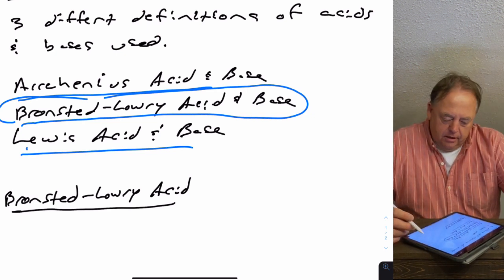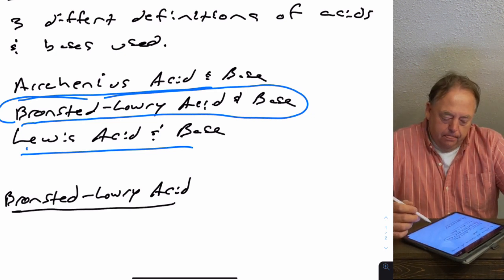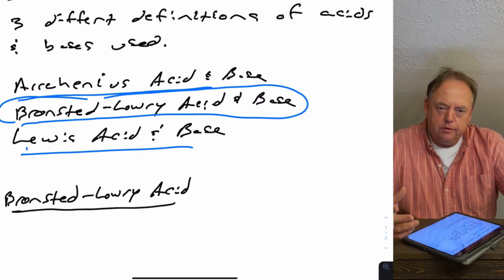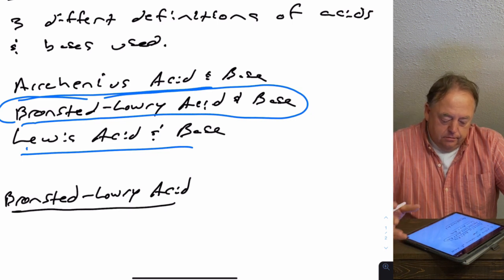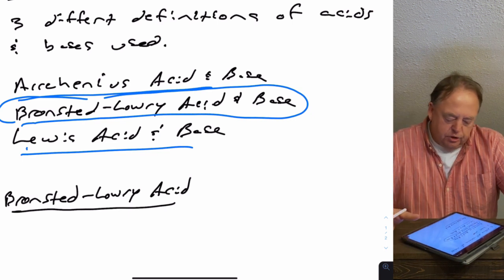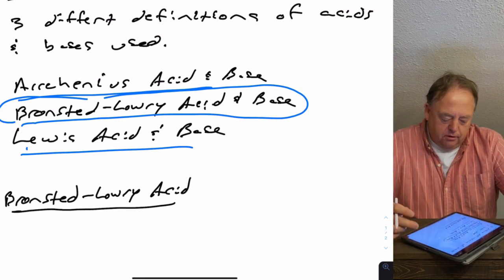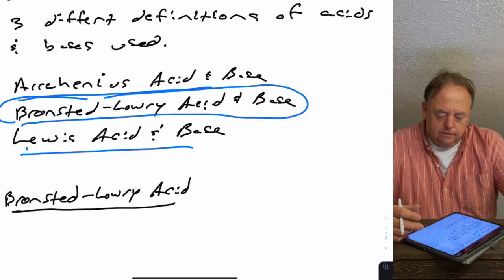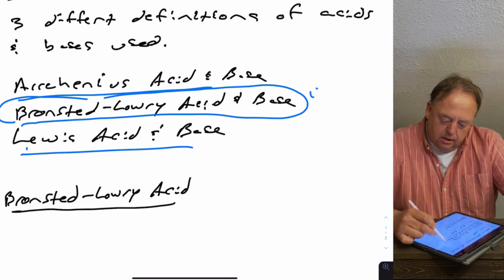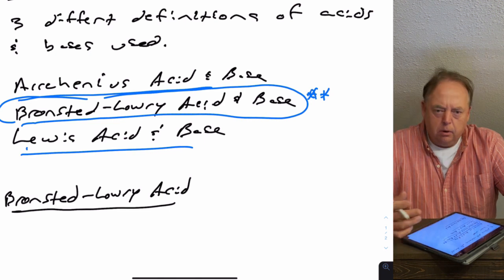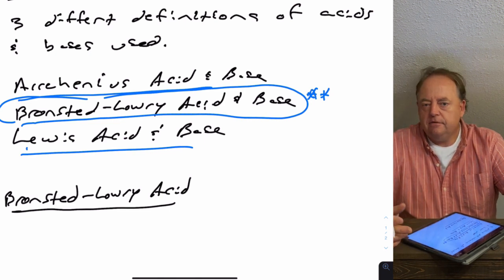For those of you who go on to Chem 1312, there will be two entire chapters devoted to acids and bases, and in those chapters you cover the Arrhenius definition and the Lewis acid-base definition. In this chapter you'll just have to know the Bronsted-Lowry definition.